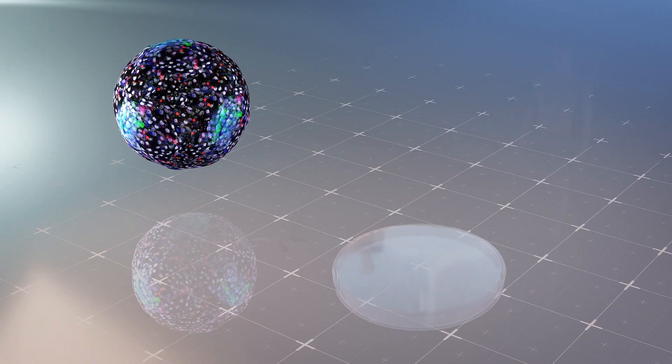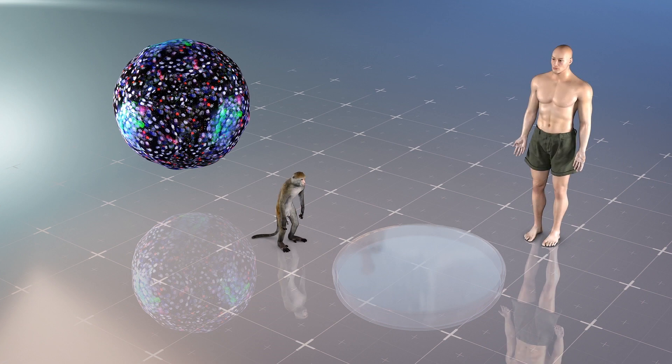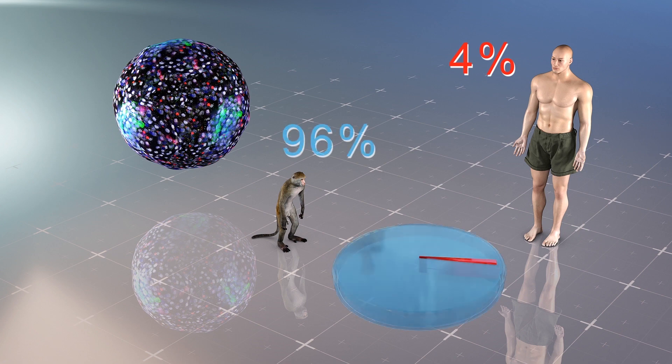Speaking to The Guardian, research co-author Jun Wu, an assistant professor in the Department of Molecular Biology at the University of Texas Southwestern Medical Center, said human cells made up around 4 percent of the chimera embryos.